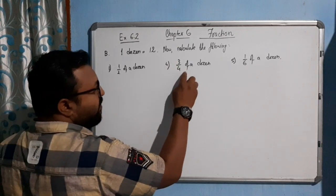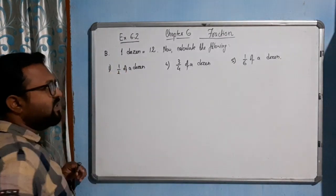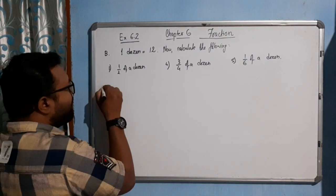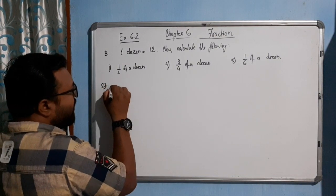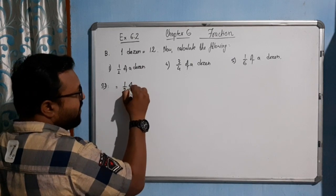Three by four of a dozen, one by six of a dozen. I have chosen only three questions here. Now let's do this one. Solution one: this one is equal to half of a dozen, of a dozen.